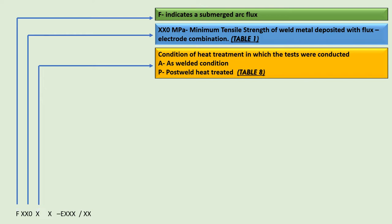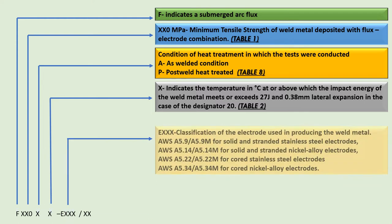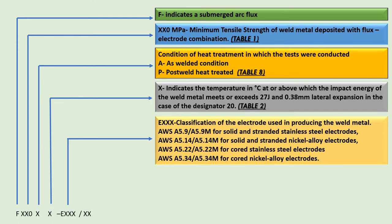After that, we have an alphabetic designator which indicates the condition of heat treatment in which the tests were conducted. A indicates as-welded condition; P indicates post-weld heat treatment condition. Table 8 in SFA 5.39 gives detail about this. After this, we have a numeric designator. This number indicates the temperature in degrees Celsius at or above which the impact energy of the weld metal meets or exceeds 27 joules and 0.38 mm lateral expansion. The details about impact test requirements are given in SFA 5.39 Table 2.